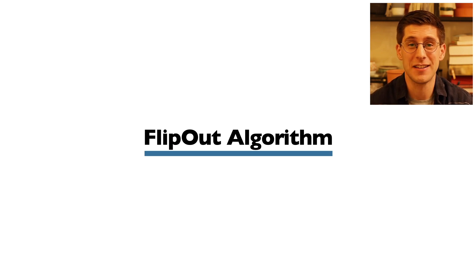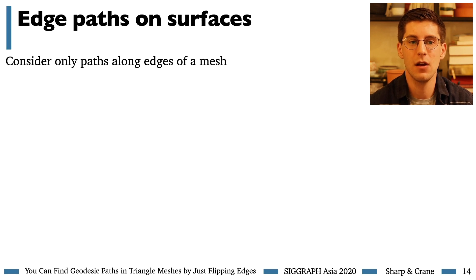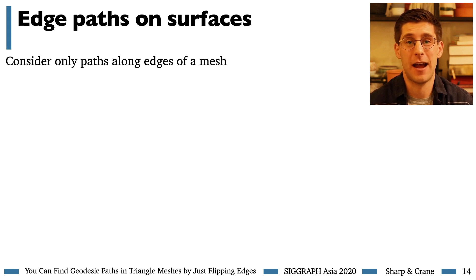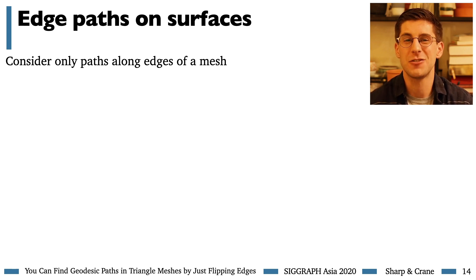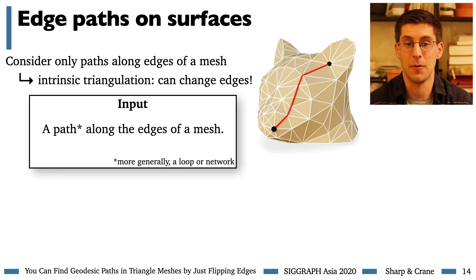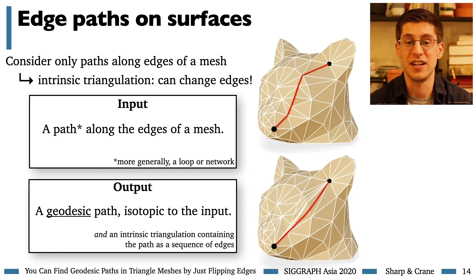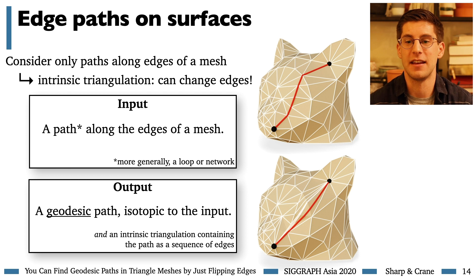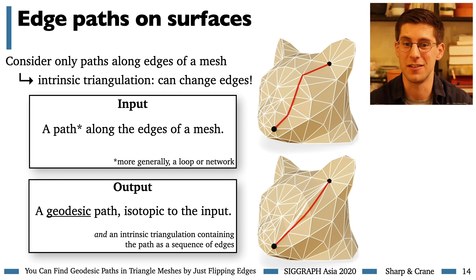With that machinery in place, let me explain how to find geodesics solely by flipping edges. We represent curves only as sequences of edges in a triangulation — more like in a graph theory sense. This should sound too restrictive at first, but remember that with intrinsic triangulations we can change the edges, so there is hope. Our algorithm takes as input a path along the edges of a mesh — or more generally a loop or curve network — and shortens it, pulling it tight to produce a geodesic edge path. This path will be isotopic to the input, meaning it can be continuously deformed from the original, and it will be a sequence of edges in an intrinsic triangulation, which is a very useful property for downstream tasks.